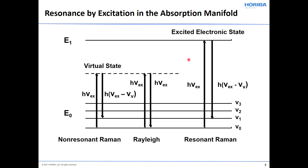Resonance Raman scattering is basically different insofar as the excitation wavelength can couple to an excited electronic state. So if you have an absorption such that the exciting laser wavelength matches that of an absorption band, you can then drive the molecule not to a virtual state, but to an excited electronic state, whereupon the molecule can relax again to the first excited vibrational state, just as in normal Raman scattering.